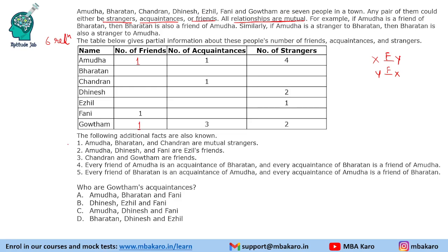The first statement says Amudha, Bharatan, and Chandran are mutual strangers. So Bharatan and Chandran will be strangers for Amudha. Similarly, Amudha and Chandran will be strangers for Bharatan, and Chandran will have Amudha and Bharatan as strangers. This set seemed difficult but was not so difficult — I would rate it as moderate. One just needed to understand the concept of mutual relationships because most of the information is available and you can keep filling with the statements.